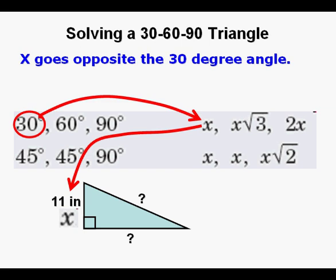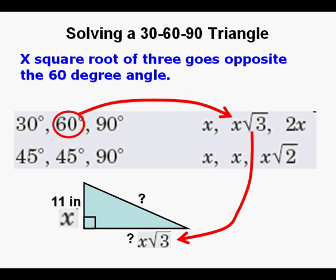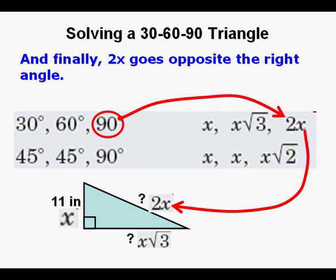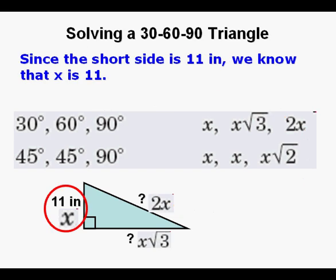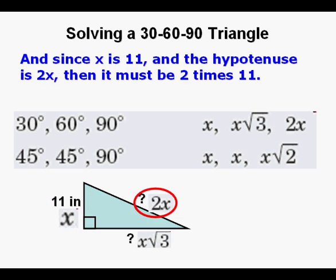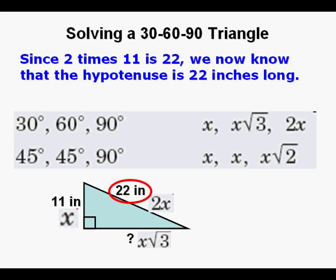Let's label the sides. Opposite the 30 degree angle is x. Opposite the 60 degree angle is x√3. And finally, 2x goes opposite the right angle. Since the short side is 11 inches, we know that x is 11. And since x is 11 and the hypotenuse is 2x, then it must be 2 times 11 or 22. So that side is 22 inches long.